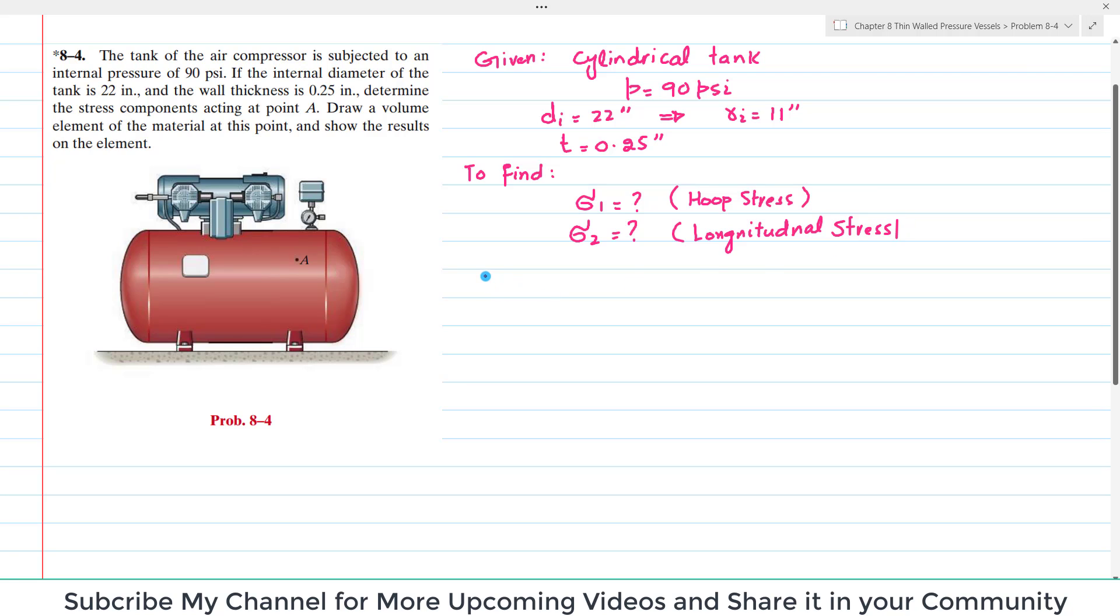So let's start with the solution. As we know, hoop stress equals P times R divided by T. But first we have to check whether this is a thin wall pressure vessel or thick wall. So first to check for thin wall, we have a condition that R by T should be greater than 10 for thin wall pressure vessel.